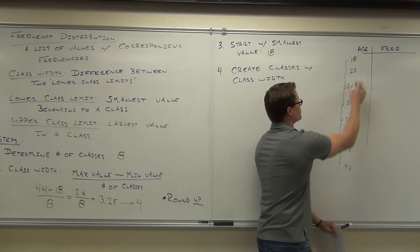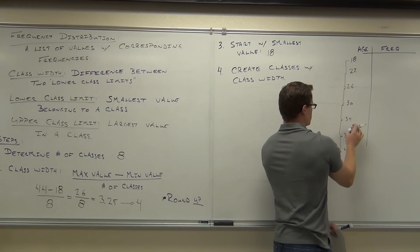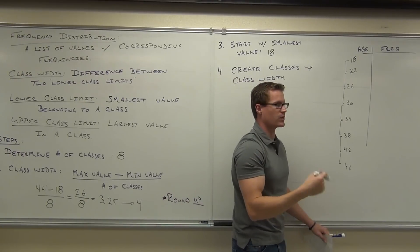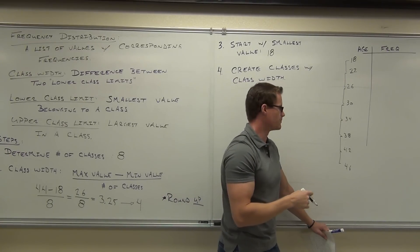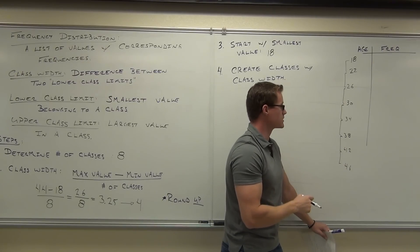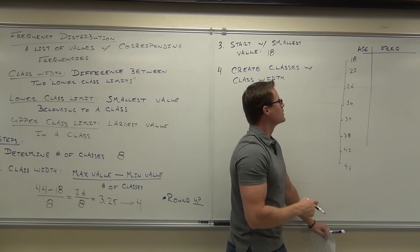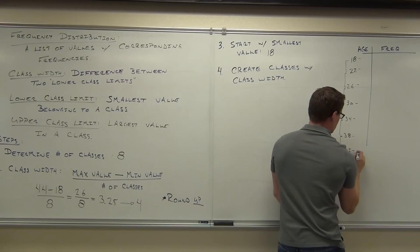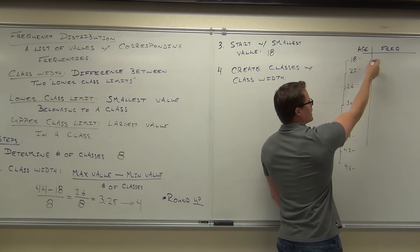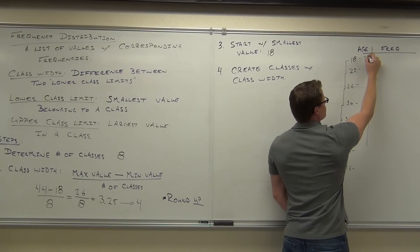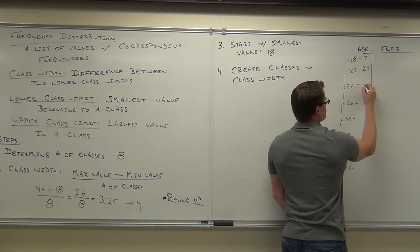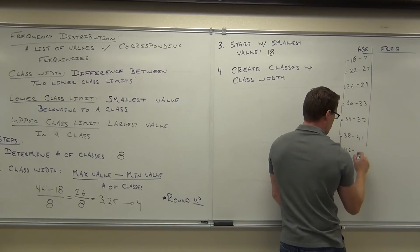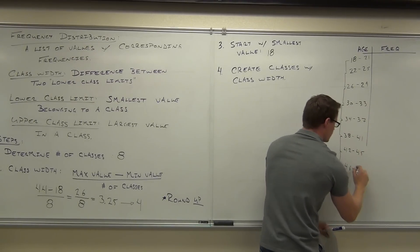Our last class is going to include... One, two, three, four, five, six, seven, eight. Why are we too many? I guess that could happen since you round up. We might have an extra class in there, which we do. We're going to have zero, 46 through 49. So we do this, then we create our classes going this way. We're just going to go to one less than our next lower class limit. So this is going to be our 21, our 25, our 29, 33, 37, 41, 45. And then lastly, we're going to have 49.